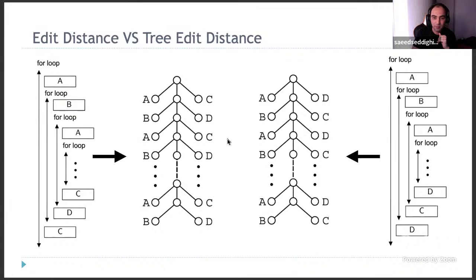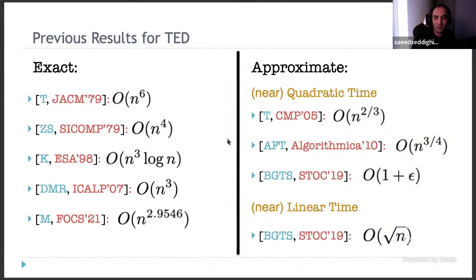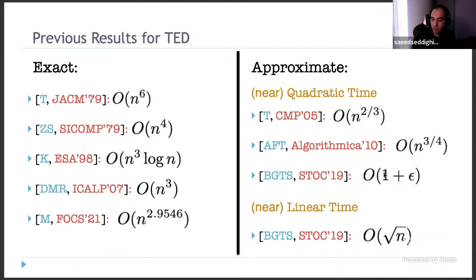What do we know about tree edit distance? There have been many algorithms: first n^6, then n^4, then n^3 log n, then n^3 — the latest result achieves truly sub-cubic time and still solves the problem exactly. Note this only works without weights; with weights there are conditional lower bounds showing better than cubic is likely impossible. For approximations: in quadratic time we can get a (1+epsilon) approximation, and in near-linear time we can get a sqrt(n) approximation.